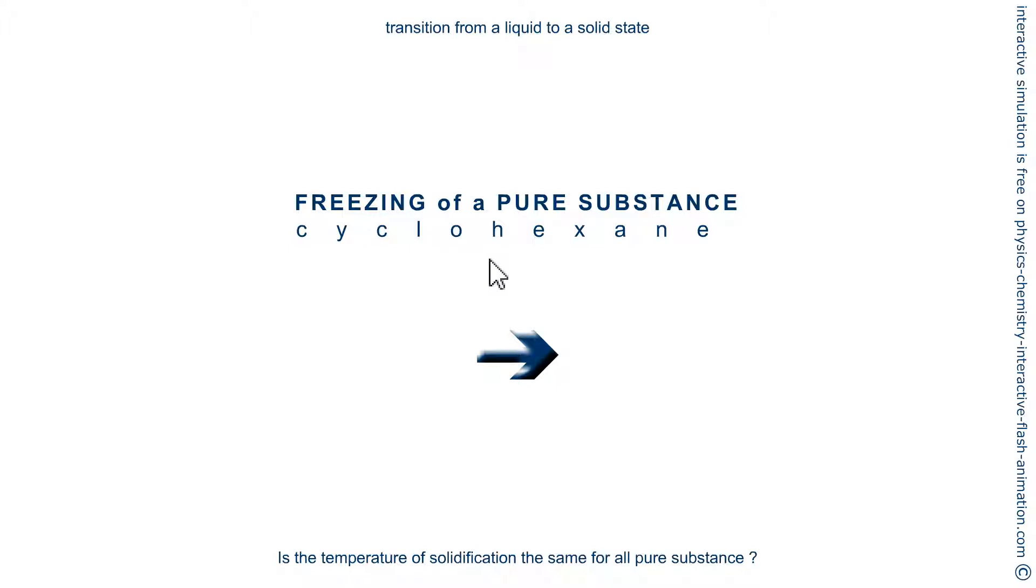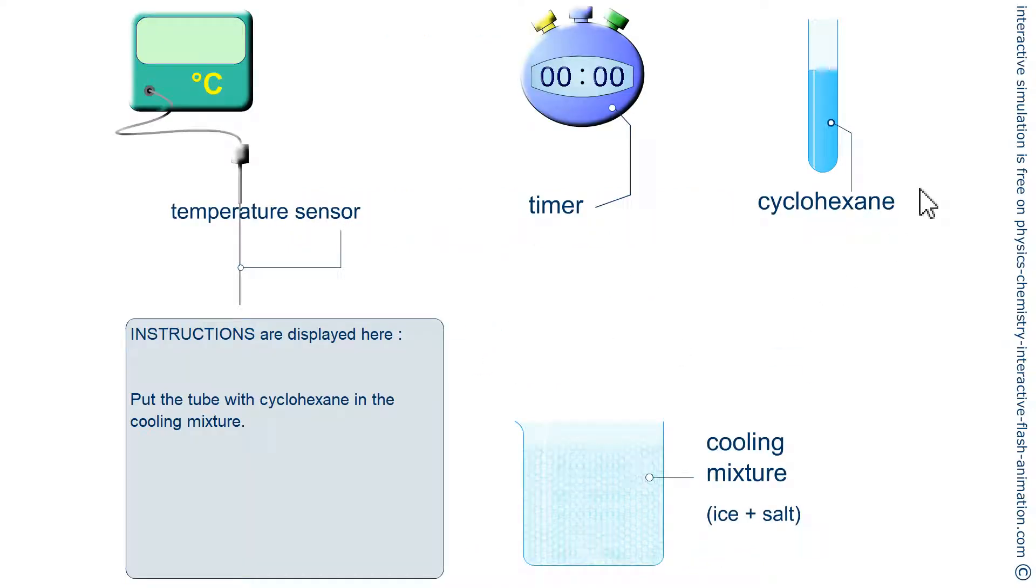To find out, we will focus on the solidification of cyclohexane. There is some in this test tube that we put in the cooling mixture: crushed ice and salt.